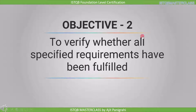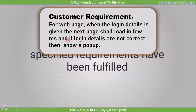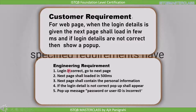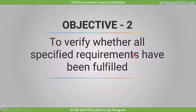The second objective is to verify whether all specified requirements have been fulfilled. After analyzing the customer requirement and asking questions, we have the engineering requirement, which includes: if login is correct, go to the next page; next page shall load in 500 milliseconds; next page shall contain personal information; if login detail is not correct, a popup shall appear; and the popup message is 'password or user ID is incorrect.' By asking questions, we got all the missing information included in the engineering requirement. So in each stage, we have to verify whether all specified requirements have been fulfilled or not.